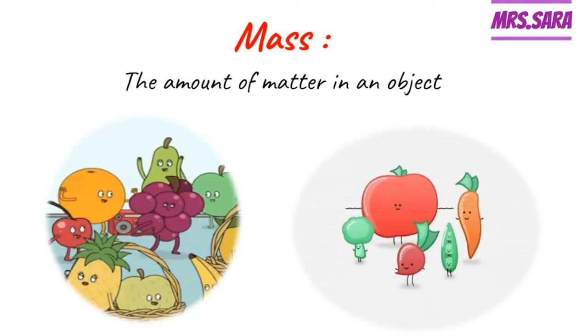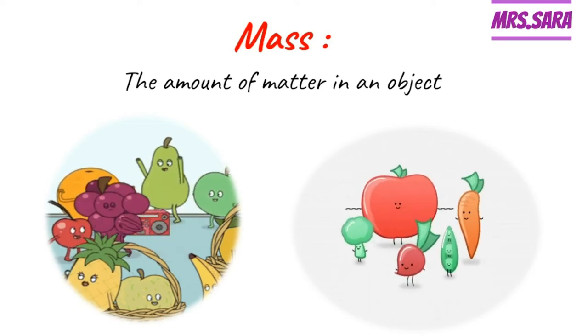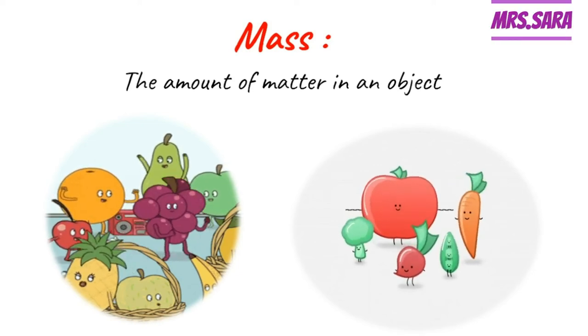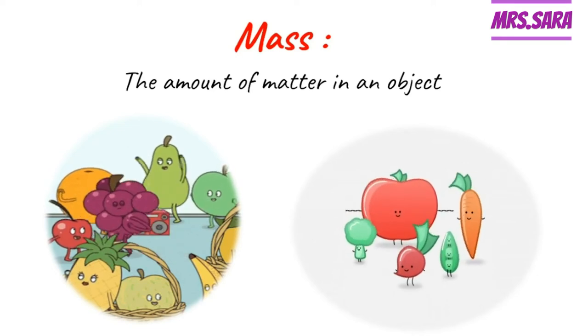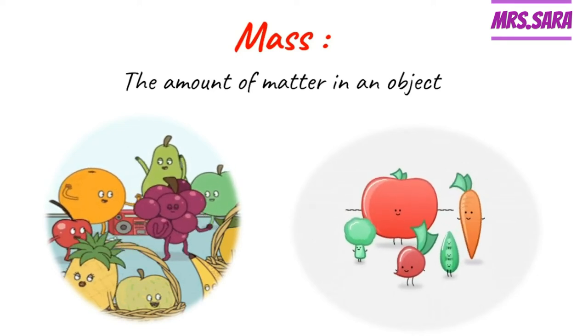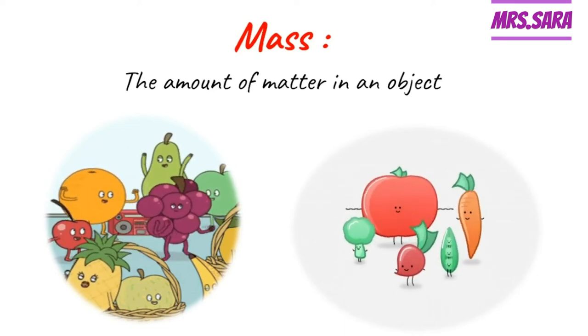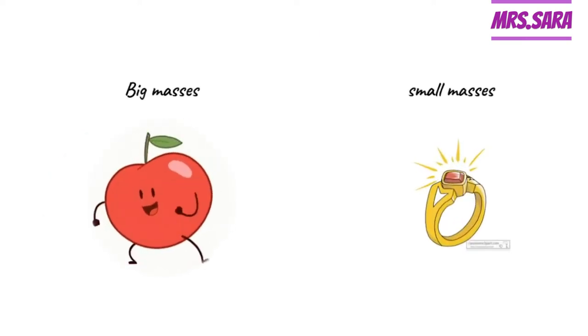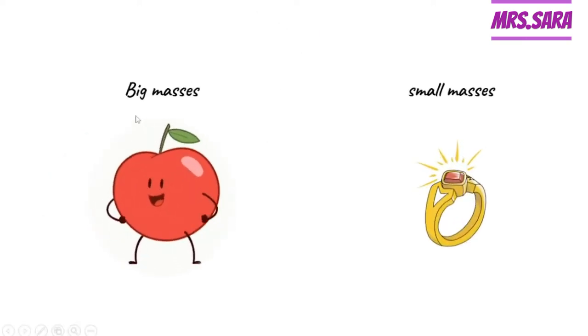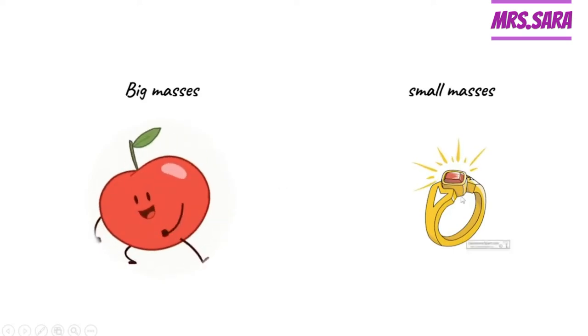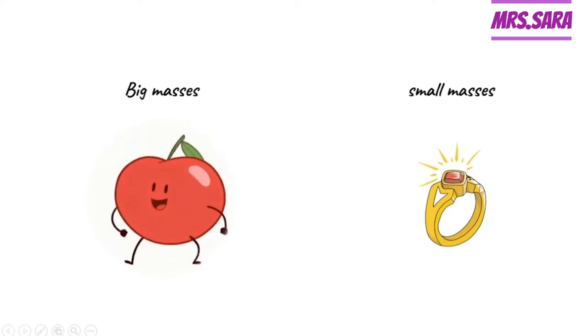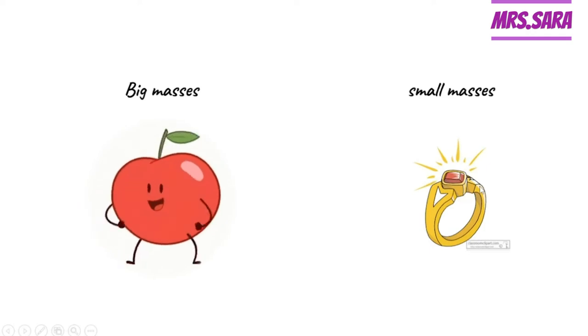Hello Primary 3, how are you today? Last video we talked about mass and we said that mass is the amount of matter in the object, or how heavy the object is. So we have small masses and we have big masses. Big masses like fruit and vegetables, and small masses like a ring, bracelet, or necklace.